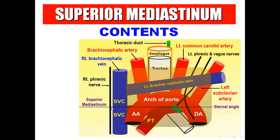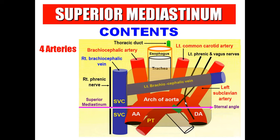The superior mediastinum contains many structures. Above the plane of the sternal angle we have several structures. Number one: four arteries. The aortic arch gives three branches — brachiocephalic artery, left common carotid artery, and left subclavian artery. Then four veins: left brachiocephalic vein and right brachiocephalic vein, which join to form the superior vena cava. The upper part of the superior vena cava is in the superior mediastinum; the lower part is in the middle mediastinum. Also the left superior intercostal vein.